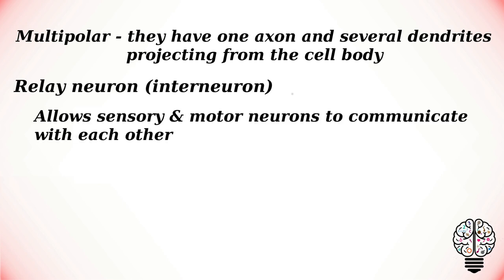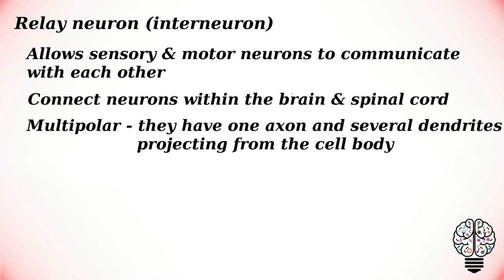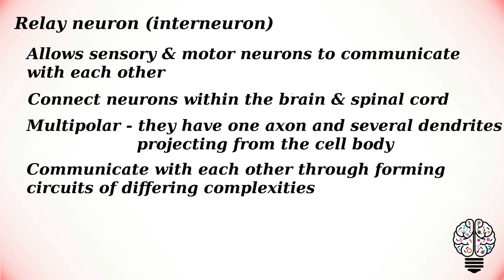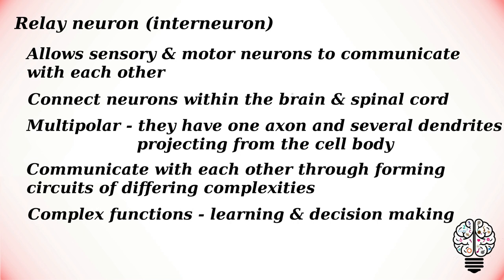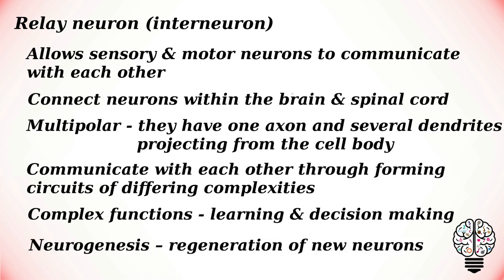The third type is relay neurons, also known as interneurons, which allow sensory and motor neurons to communicate with each other. Relay neurons connect various neurons within the brain and spinal cord and are easy to recognize due to their short axons. Similar to motor neurons, interneurons are multipolar, meaning they have one axon and several dendrites. Interneurons can also communicate with each other through forming circuits of different complexities. This communication assists the brain in completing complex functions such as learning and decision making, as well as playing a vital role in reflexes and neurogenesis — the regeneration of new neurons.